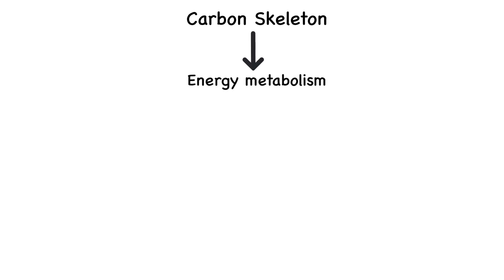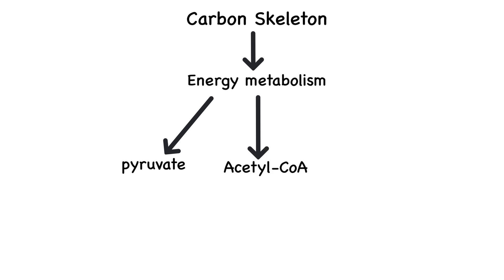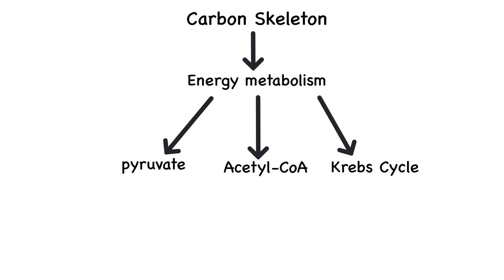Once the nitrogen has been removed, the remaining carbon skeleton can enter energy metabolism through several pathways, depending on the type of amino acid. Some amino acids are converted into pyruvate, others into acetyl coenzyme A, and some feed directly into the Krebs cycle. This flexibility allows amino acids to be used for ATP production, but it comes at a cost. Breaking down proteins for energy leads to the loss of muscle and functional proteins. Because of this, your body prefers to use carbohydrates and fats for energy, and only turns to protein as a fuel source in extreme conditions such as prolonged fasting, intense exercise, or malnutrition.